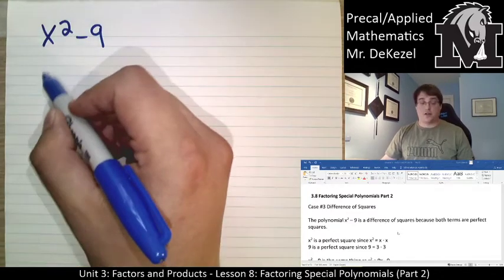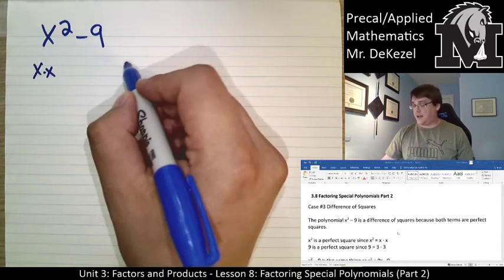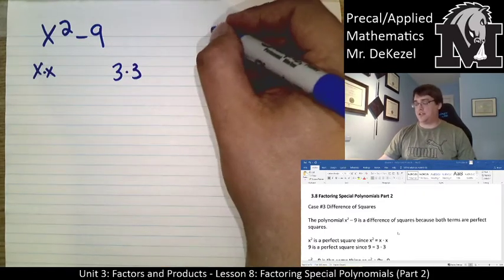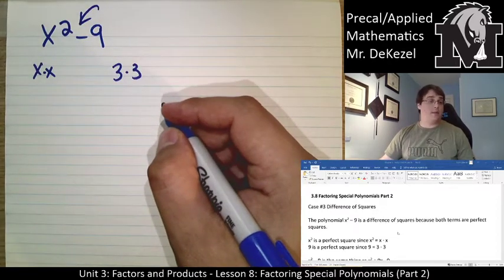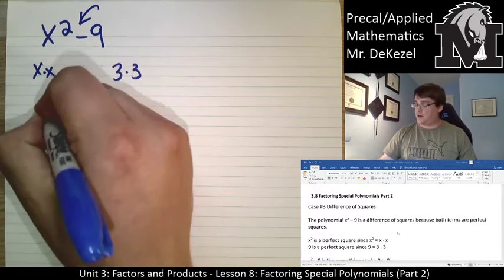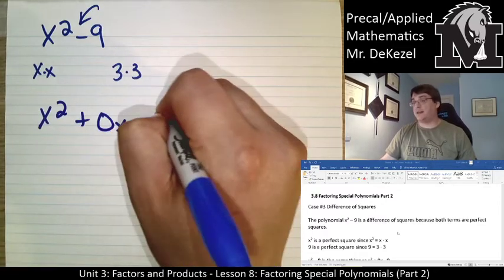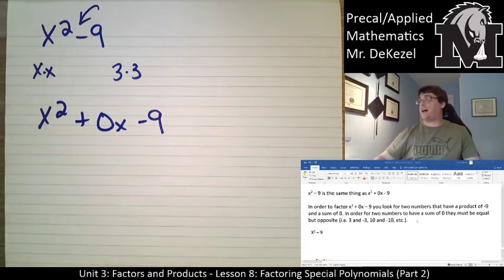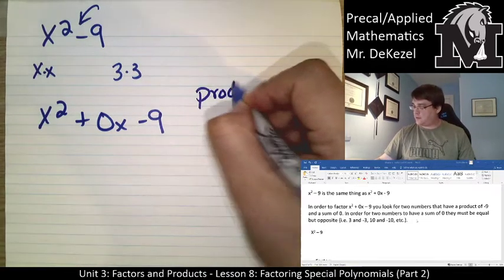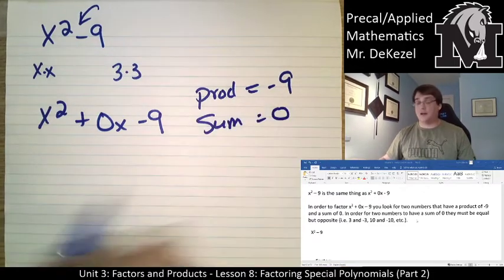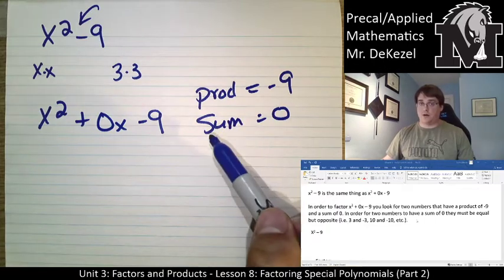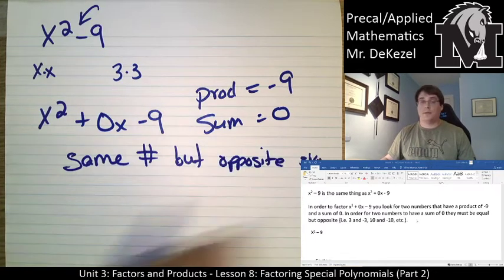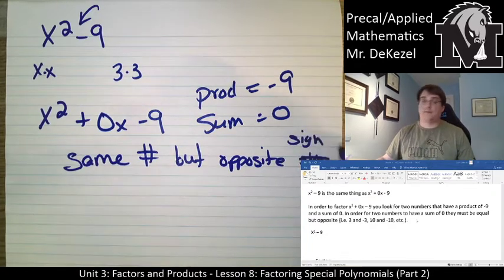Both of these terms are perfect squares: we can go x times x to get x squared, and 3 times 3 to get 9. You're probably noticing — where's that middle term, the x term that should be in here? We can imagine that it's there, but in this case it's 0. So x squared plus 0x minus 9 is what we're working with. To factor this, we're looking for two numbers that have a product of negative 9 and a sum of 0.